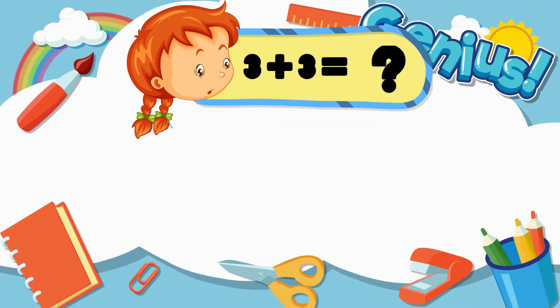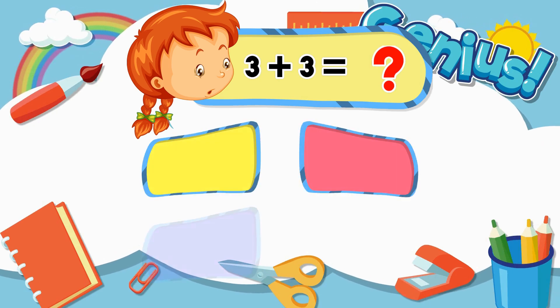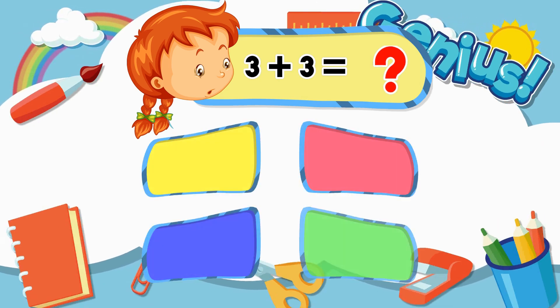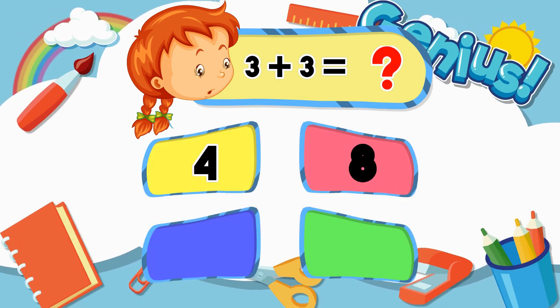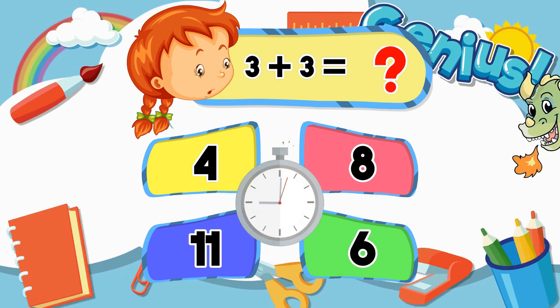What is three minus three? Options: Five, Three, One, Zero. Answer: Zero.